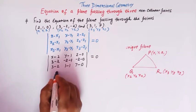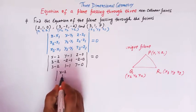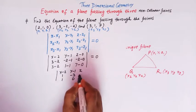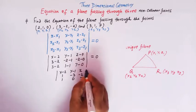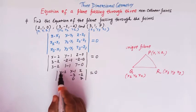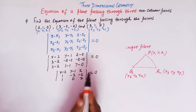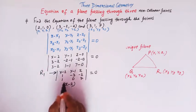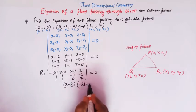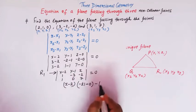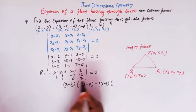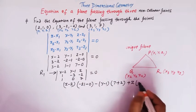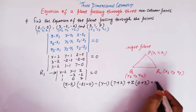So the determinant becomes: first row (x − 2), (y − 1), z; second row 1, −3, −2; third row 1, 0, 7, all equal to zero. Expanding along the first row, we get (x − 2)(−21 − 0) minus (y − 1)(7 + 2) plus z(0 + 3) = 0.